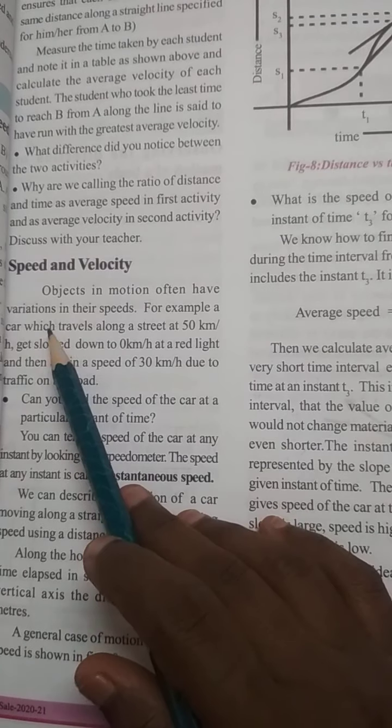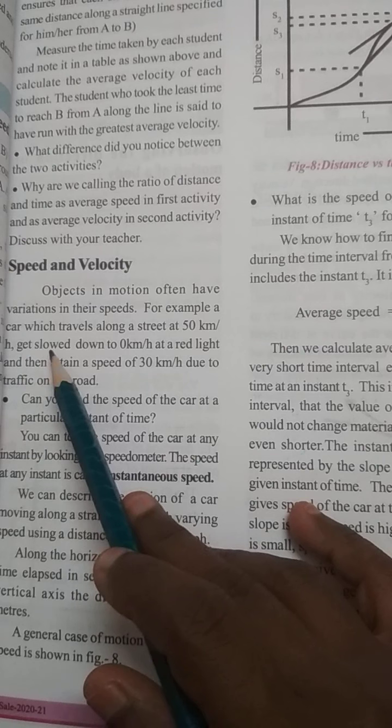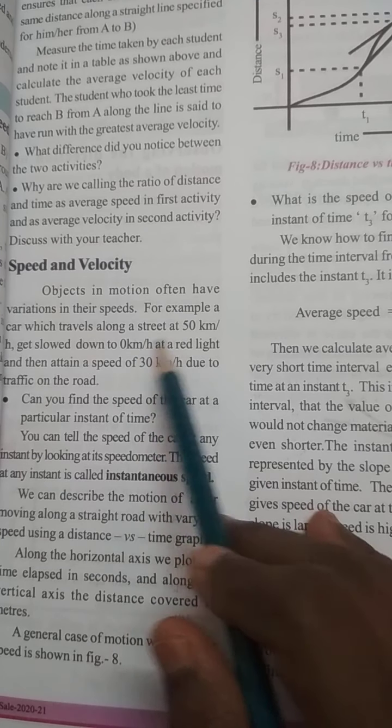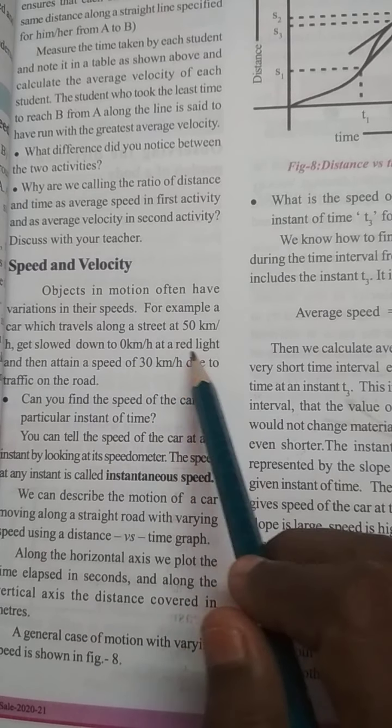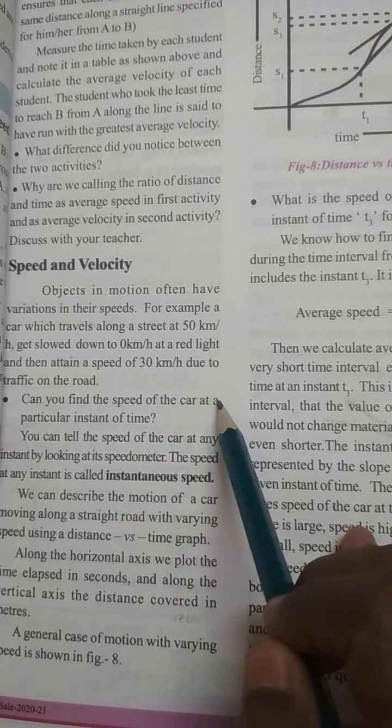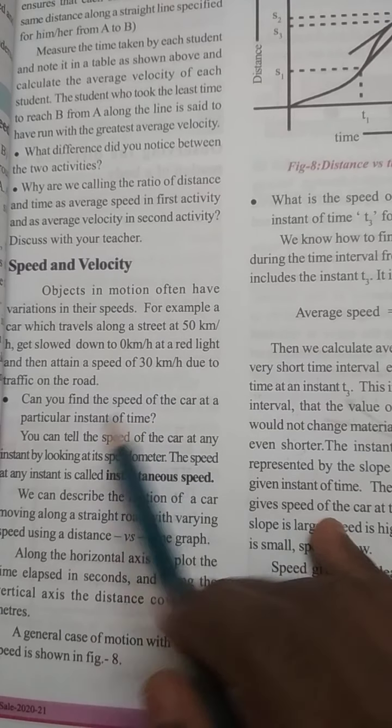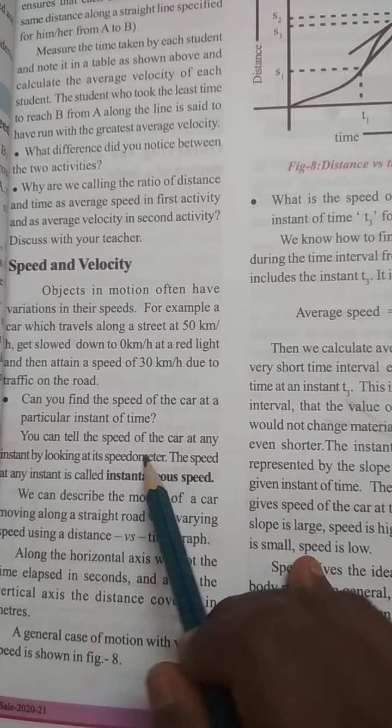For example, a car which travels along the street at 50 km per hour gets slowed down to 0 km at a red light and then attains a speed of 30 km per hour due to traffic control. Can you find the speed of the car at a particular instant of time? You can tell the speed of the car at any instant by looking at its speedometer.